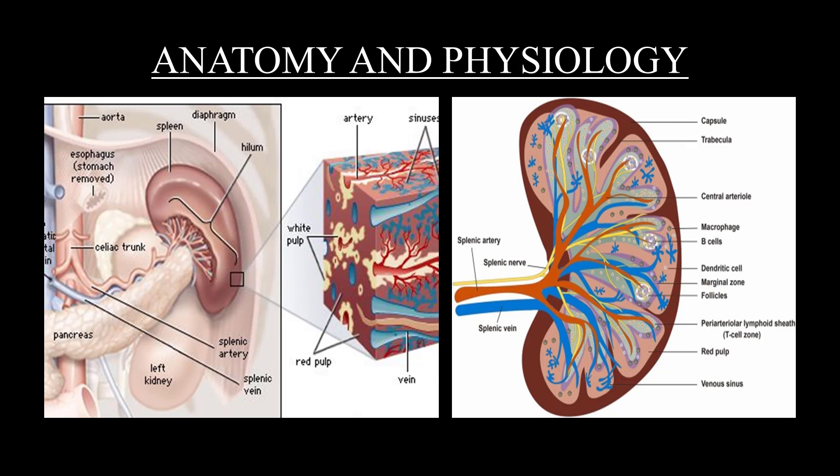The hilum is where the vessels of the spleen go in and out. The dimensions of the spleen are about 5 inches in height, which is about 12 to 13 centimeters, about 3 inches in width, which is about 7 to 8 centimeters, and 1 inch in thickness, which is about 2.5 centimeters. The weight of the spleen is about 200 grams.